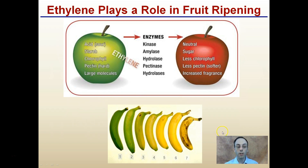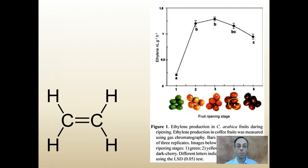Notice with our banana here, it's going from a green banana all the way to a ripe banana to an overly ripe banana. This is showing an increase in ethylene that is causing this ripening to occur.